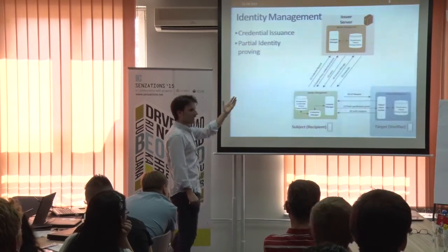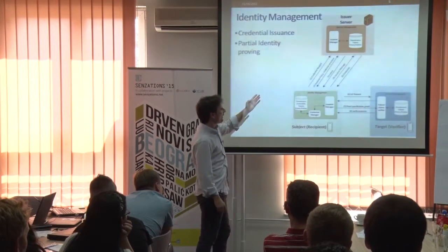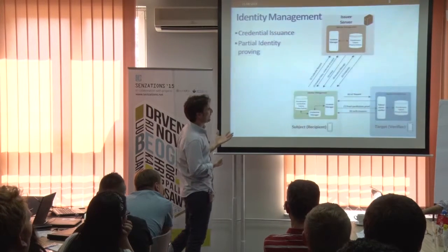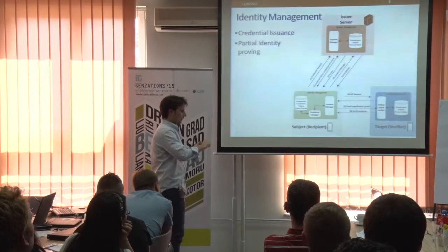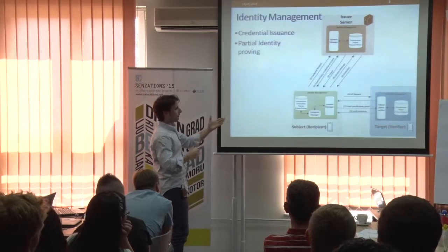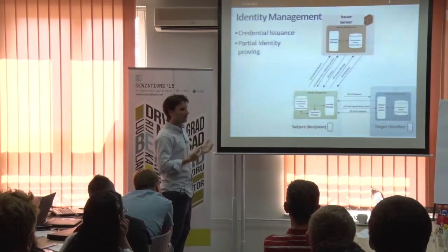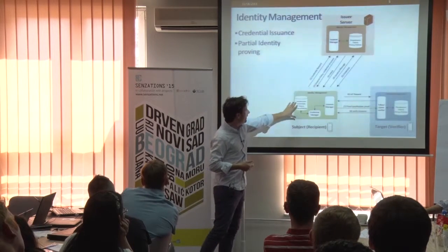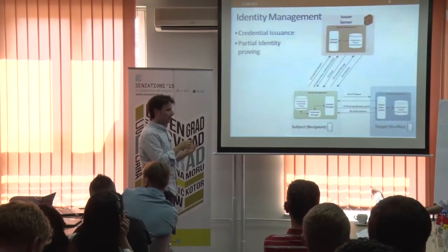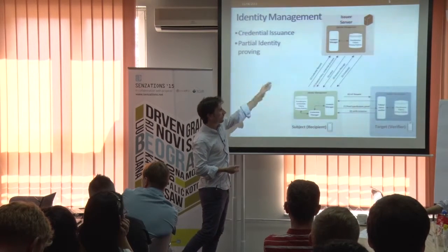You will first need to obtain a credential — an identity credential — from the issuer. That credential is an IDMX credential. Once you have that credential, you can derive or generate different partial identities from it. The credential contains all the attributes that you hold as an entity.